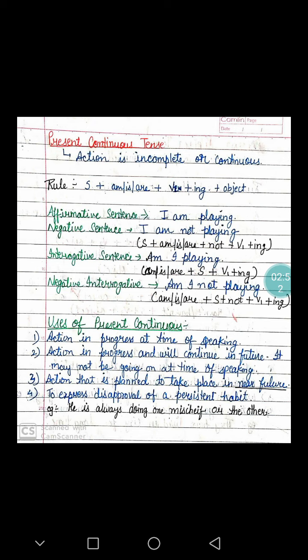The president is going to meet Ram. What is the president going to do? He is going to meet Ram. This action is going to take place in the near future. In the present continuous tense, we talk about actions which are going to take place in the near future — they have not yet started but will be starting soon.